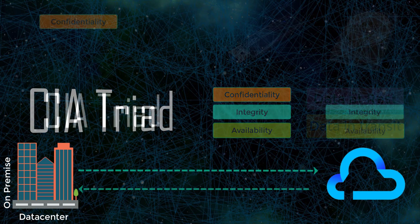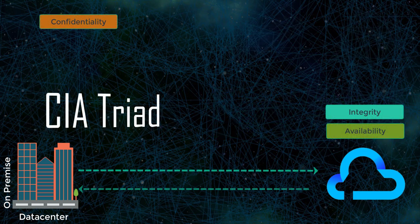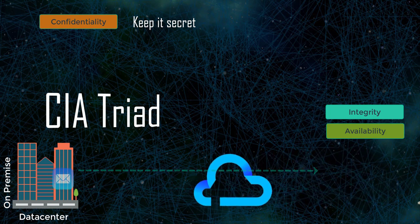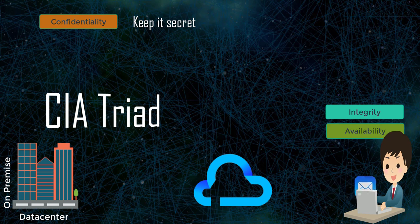What is confidentiality? If we look it up in the Oxford dictionary, confidentiality is about keeping things secret. That is what it is in IT as well. So if I send an email to you, you get it — and that also means that nobody else gets it. The data in the email remains a secret between you and me.